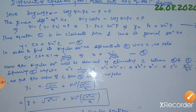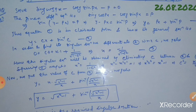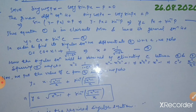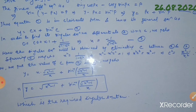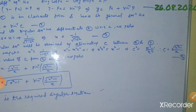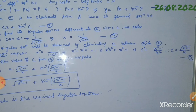The singular solution is obtained by eliminating c between equations 2 and 3. Squaring equation number 3, we get x² equals 1 divided by (1 minus c²). This implies x² minus x²c² equals 1, which implies x²c² equals x² minus 1, and therefore c² equals (x² minus 1) divided by x². So c equals root over (x² minus 1) divided by x, which is equation number 4.